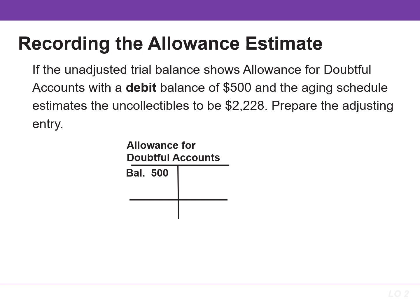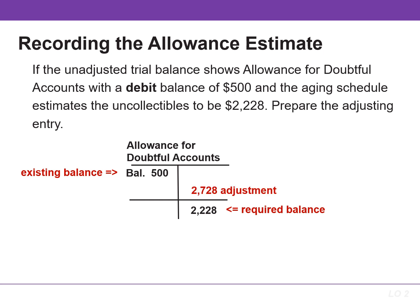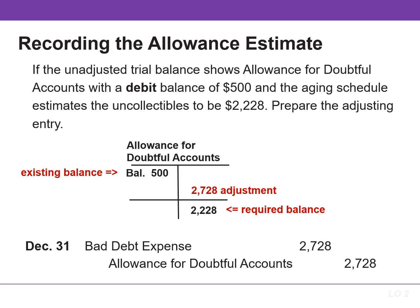The allowance account may have a debit balance prior to the adjustment. This occurs when the write-offs during the year exceeded the previous estimates for bad debt. In this instance, the company adds the debit balance to the required balance when it makes the adjusting entry. For example, if there was a $500 debit balance in the allowance account before adjustment and the required balance is $2,228, the adjustment would be for $2,728 — the sum of the existing balance of $500 plus the required balance of $2,228. This would result in a debit to bad debt expense and a credit to allowance for doubtful accounts in the amount of $2,728.